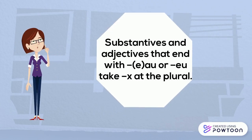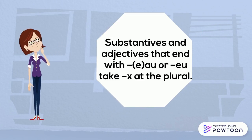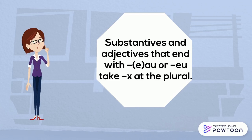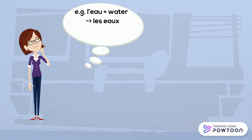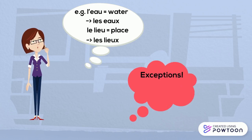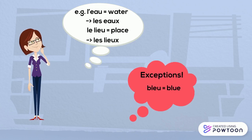Substantives and adjectives that end with EAU, AU, or EU take X at the plural. For instance: 'l'eau' (water) → 'les eaux'; 'le lieu' (the place) → 'les lieux'. There are three exceptions, and the most important one is 'bleu' (blue) → 'bleus', with S.